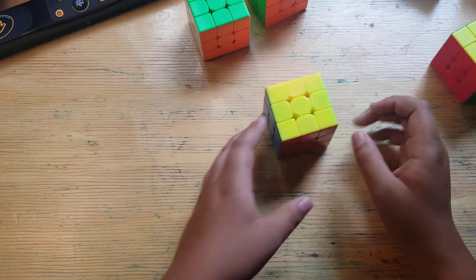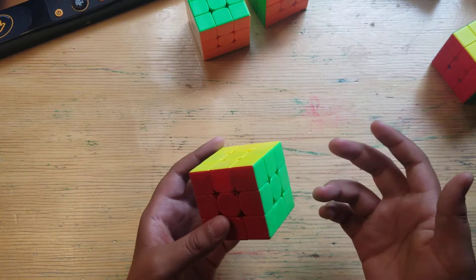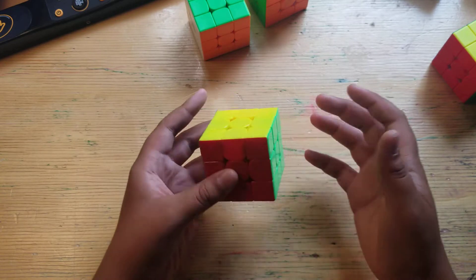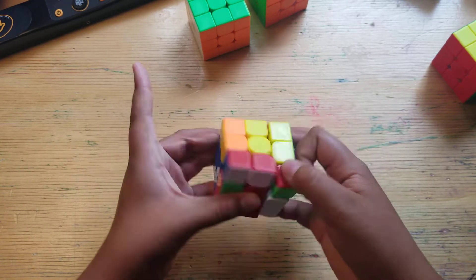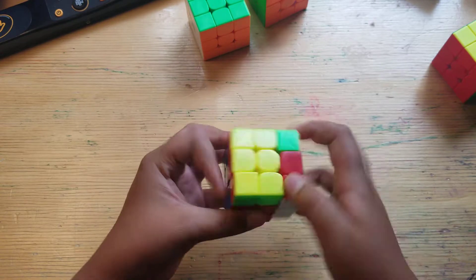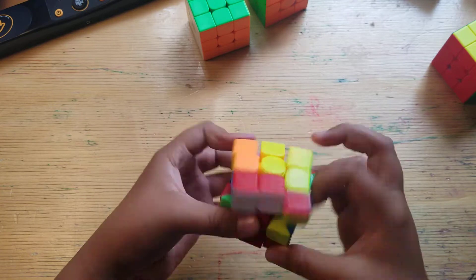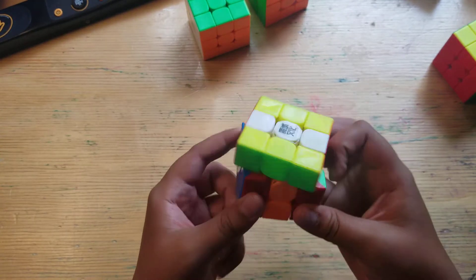Let's start off with the Moyu Weilong WRN. It's really cool. A lot of people main it and still have it as their main. Let's do some first turns. Wow, that is fast! It's really solid. It's not going to lock up on me.